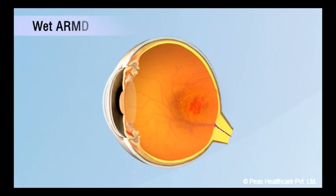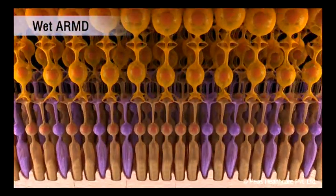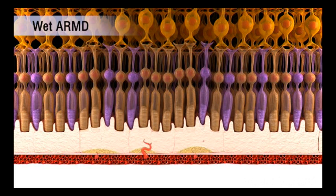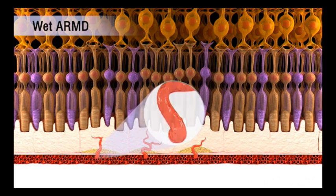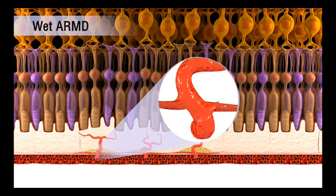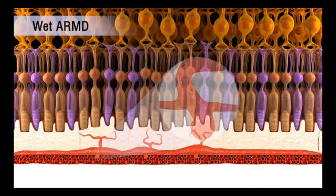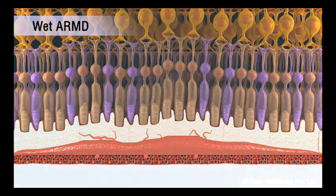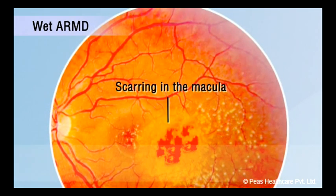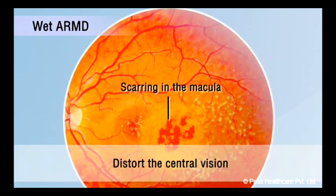The wet form happens when abnormal new blood vessels grow under the macula. These blood vessels break easily and leak blood and fluid under the macula. This can damage the rods and cones and cause scarring in the macula, which can distort your central vision.